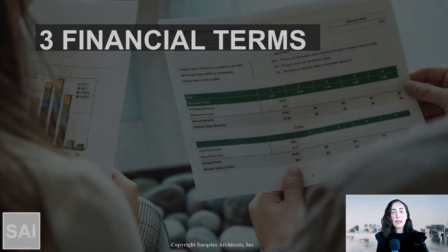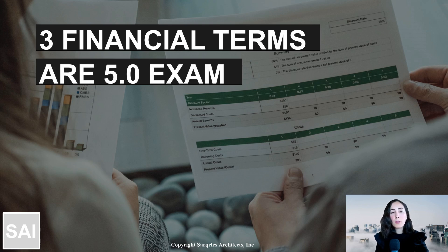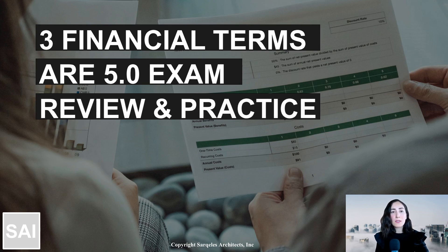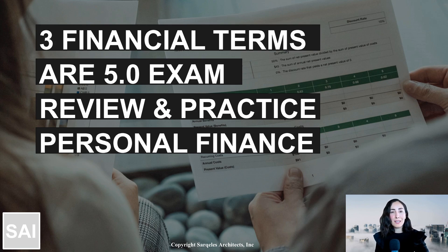There are three key financial terms that we look at in a profit and loss statement. By the end of this video, you're going to master what these three keywords are. You're going to be able to define them in your own words and understand how to apply them on an ARE 5.0 problem or concept. But above all, the profit and loss statement concept in this video will help you get smarter about your own finances, how to increase your own income, how to decrease your expenses, and ultimately create more profit to be able to live and have more freedom to do things that excite you.